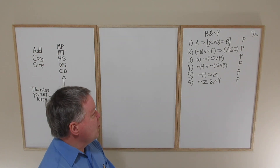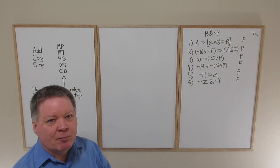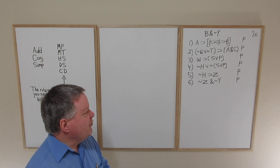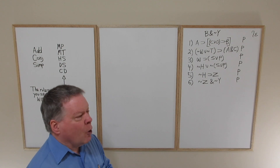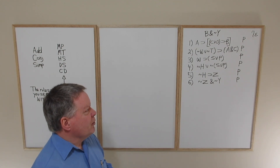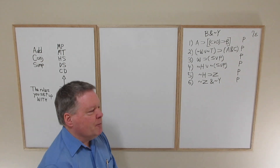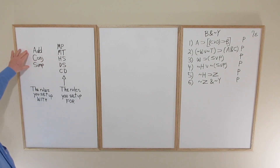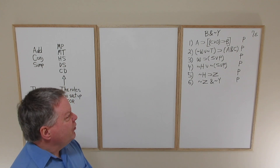We're now considering somewhat more complex situations where the sentences themselves aren't quite so simple. The number of steps it's going to take to demonstrate that if the six premises are true it's impossible for the conclusion to be false are going to be greater in number. So it's important that you're well practiced in spotting rule employment opportunities for the five rules you set up for, and also used to using the three set-up rules strategically.